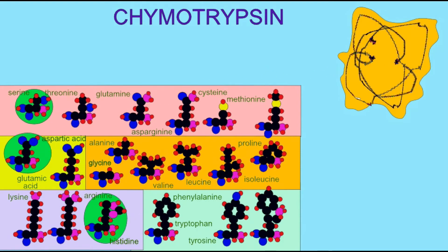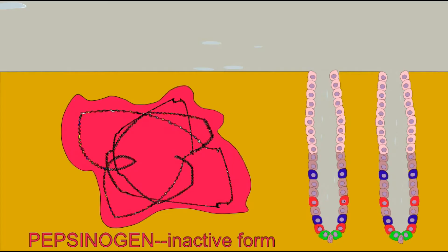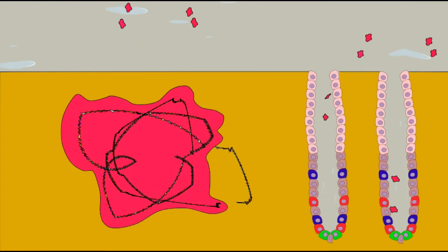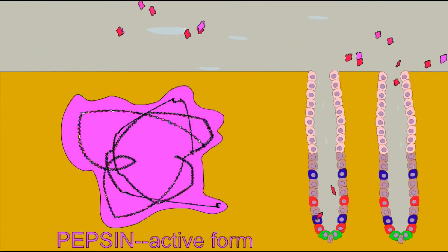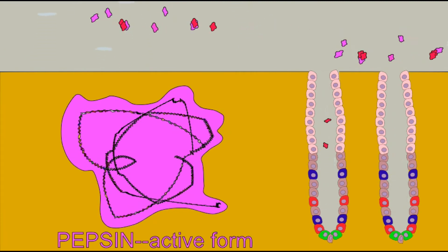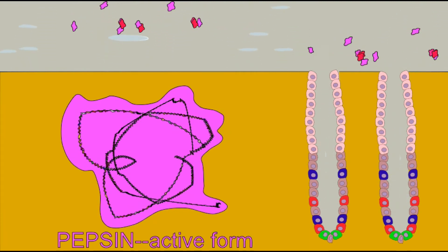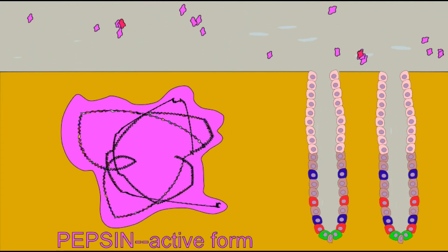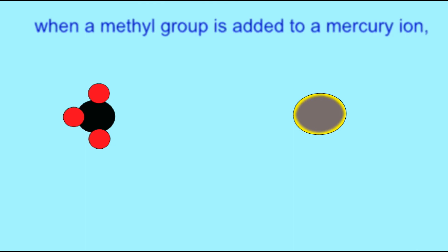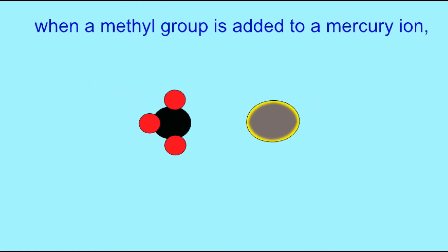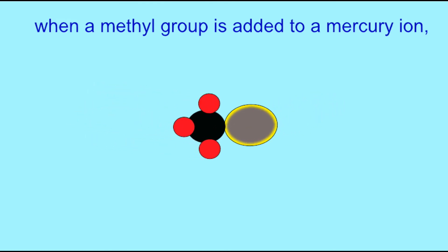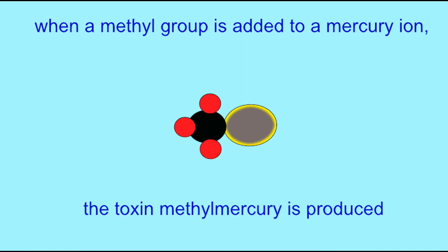The protein shape has changed so that it no longer facilitates the chemical reaction. So phenomena such as heating an enzyme, or changing the pH of the solution by adding acid, or the addition of heavy metals — these may decrease the rate of a reaction by changing the shape of enzymes, and may ultimately denature the enzymes so that they no longer function.